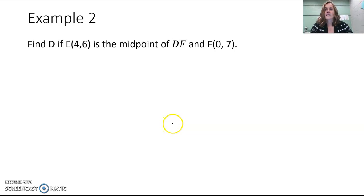Find D if E(4,6) is the midpoint of segment DF and F(0,7). So it's a little different than the last one. We're not finding a midpoint; we're actually finding one of the endpoints.